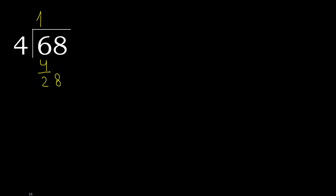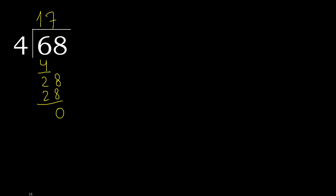Bring down 8, making 28. 4 multiplied by 8 is 32 — 32 is greater. 4 multiplied by 7 is 28 — 28 is not greater, ok. 28 minus 28 is 0. 0, and here there is no remainder, therefore finish it.